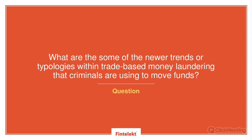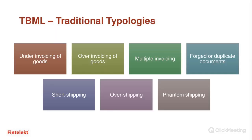Good morning and good afternoon to all. I will cover the newer trends within TBML. Before we jump into the typologies, I'd like to draw attention to the FATF definition of TBML, which states that it is the process of disguising the proceeds of crime and moving value through the use of trade transactions in an attempt to legitimize their illicit origins. Hence, in TBML the movement of value is of utmost importance. Some of the traditional typologies are under-invoicing of goods, where the invoice is raised for a lower value than the actual worth of the goods. For example, if an exporter A in India exports 1,000 wallets to an importer B in Sri Lanka and raises an invoice for $1 each while the wallet is worth $2, the importer remits only $1,000 while the consignment was worth $2,000.